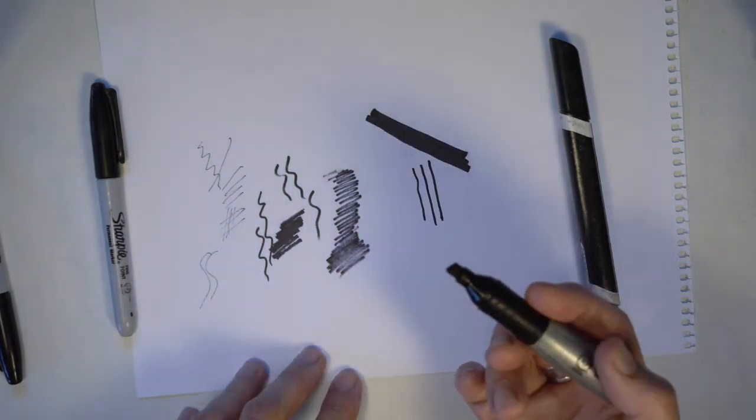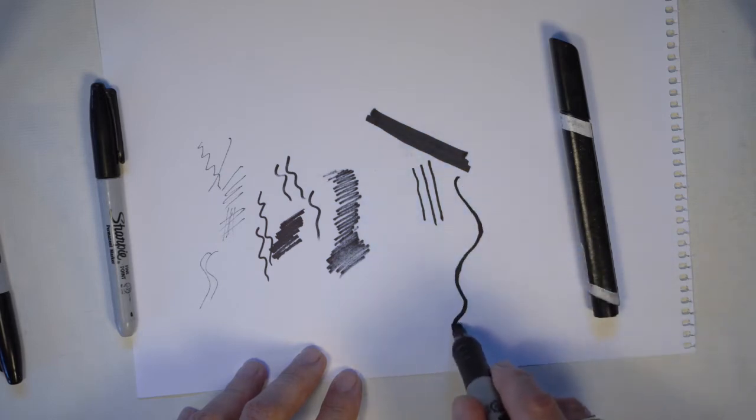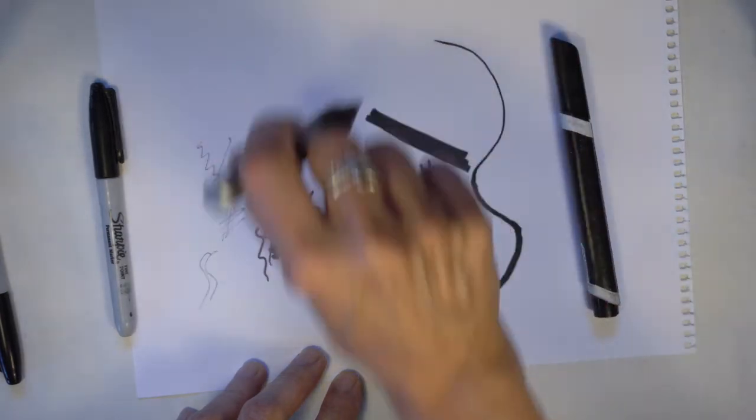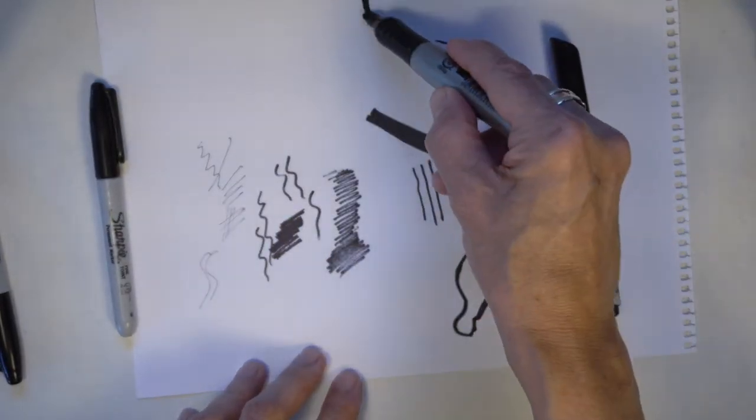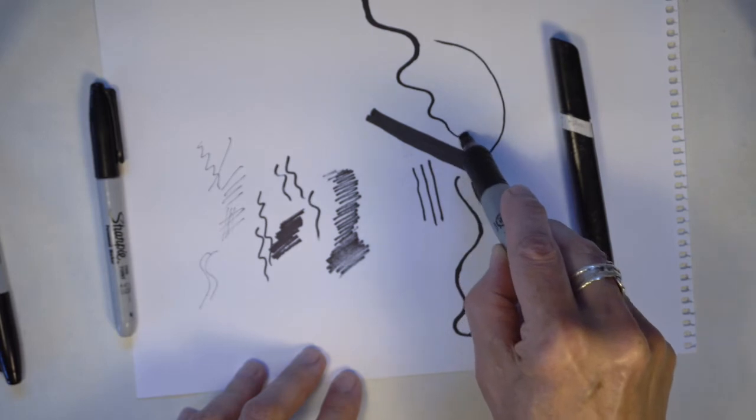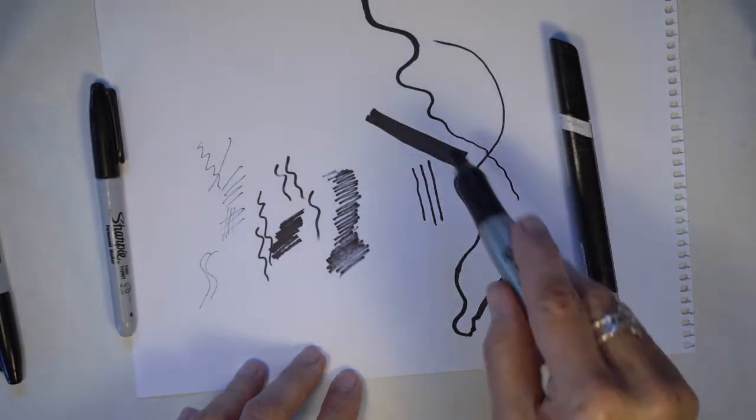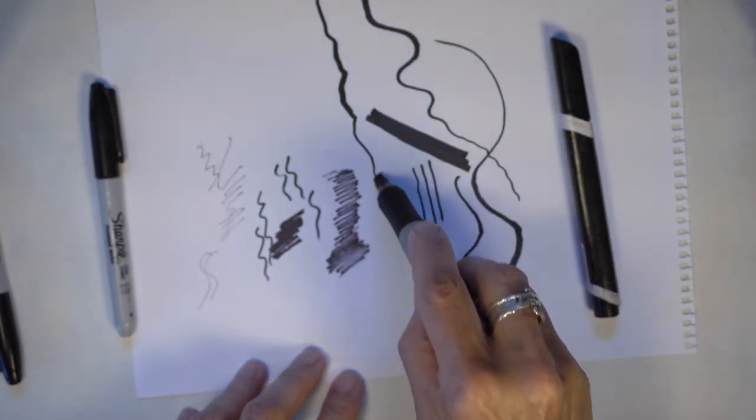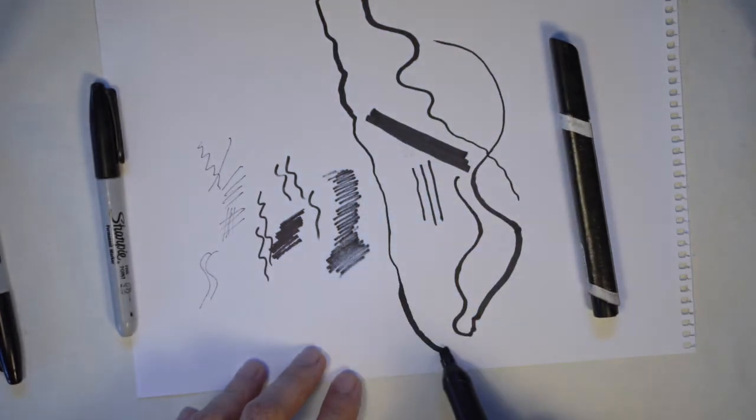And I can also, as I'm drawing, vary how I'm laying it down. So I can make a curve or a shape, a mark that goes from a wide point to a fine point, wide point to fine point, and then back again.